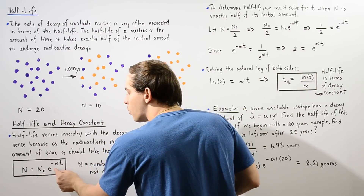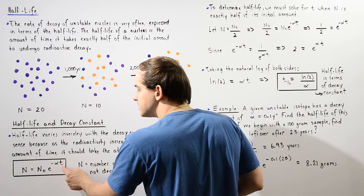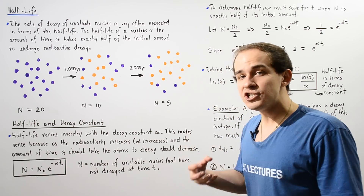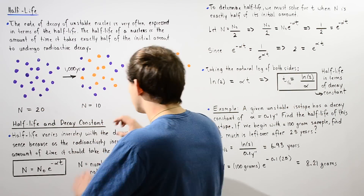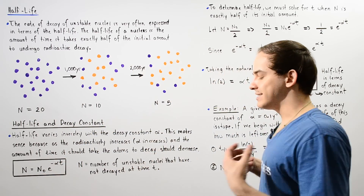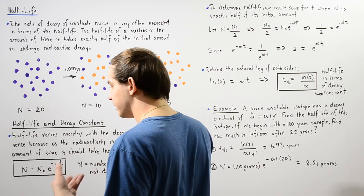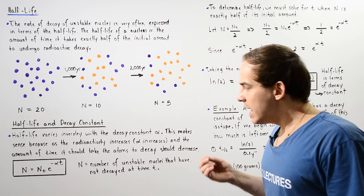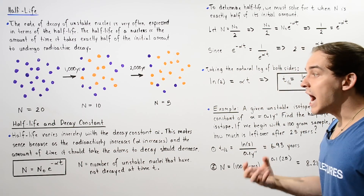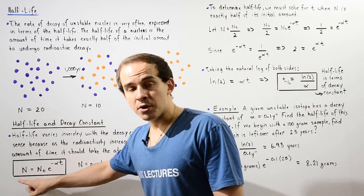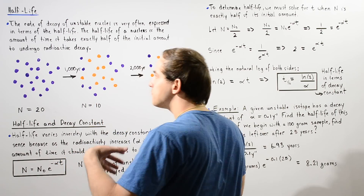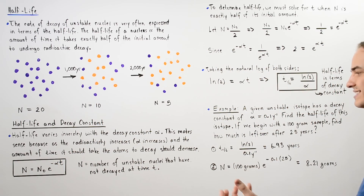So n is equal to n-naught multiplied by e to the negative alpha times t, where alpha is our decay constant and n-naught is our initial sample at a time of zero. The half-life is the value of t at which our initial sample has decayed such that exactly half of it has transformed into the more stable daughter nuclei.